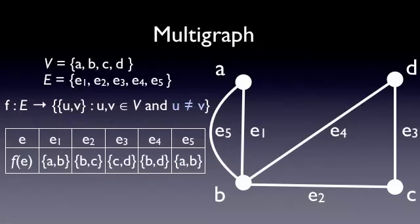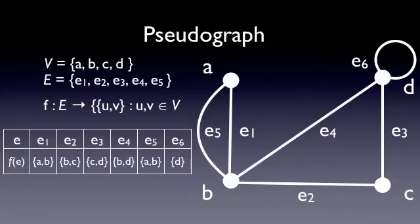Notice that for a pseudograph, that condition no longer applies. This is to allow for the fact that, in a loop, both ends of the same edge connect to the same vertex.